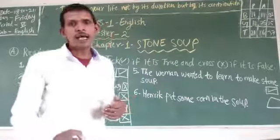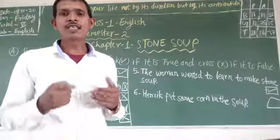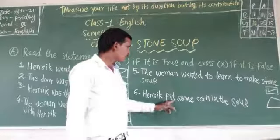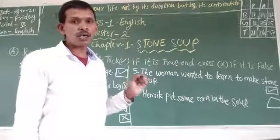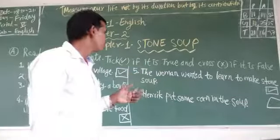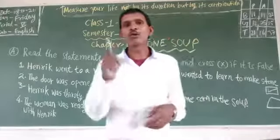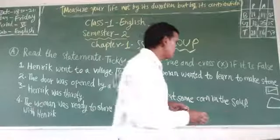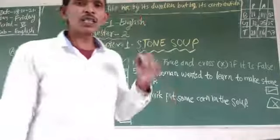Now we will see statement six: 'Henry put some coal in the soup.' This is false because Henry put some stone in the soup. So this is a false statement, and that's why we will cross the statement in the given box.